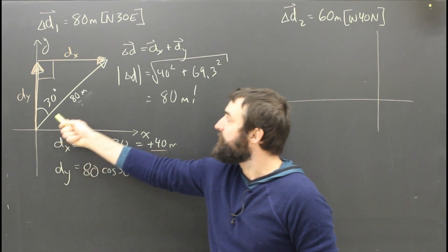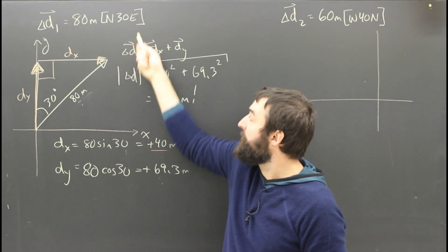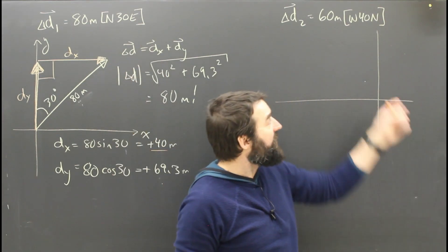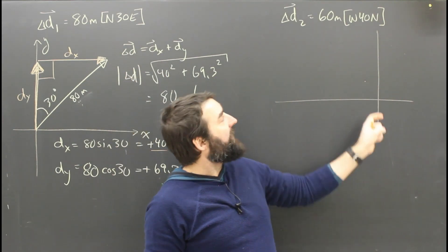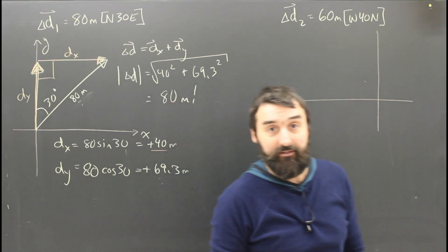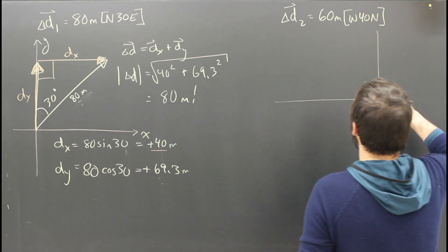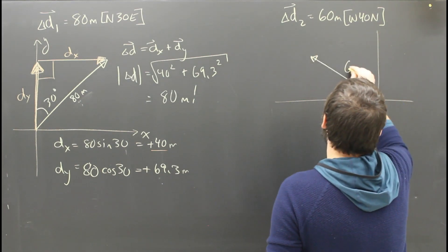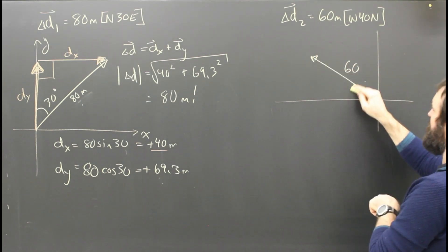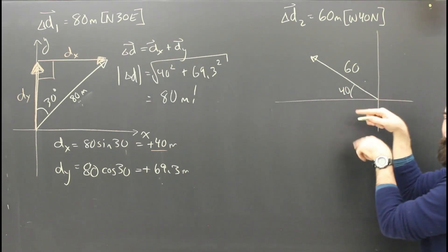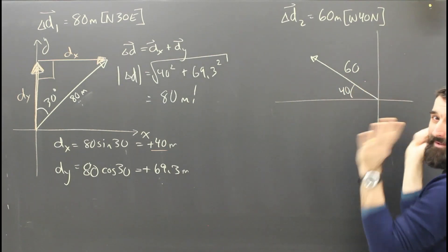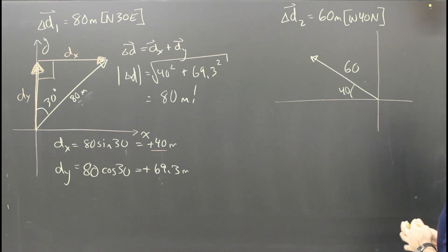So what happens if this dude walks north 30 east for 80 meters, and then the same person heads west 40 north for 60 meters? What's their x and y component of their second displacement? Well, let's draw the triangle. 60 meters west 40 north. This is where the mistakes often are, right? You label the wrong angle, or you make some silly mistake. So try to be careful.